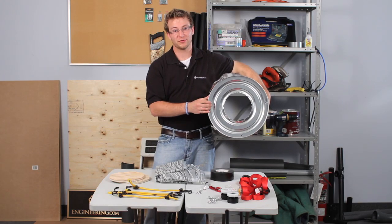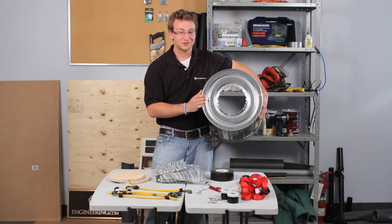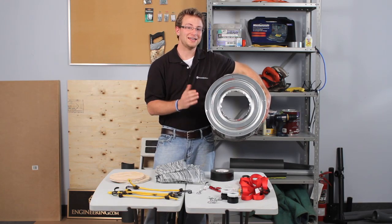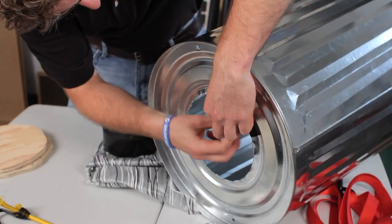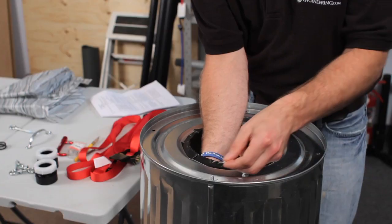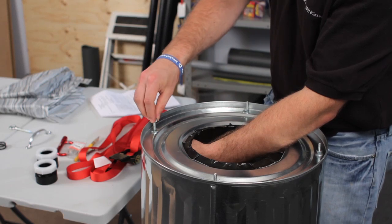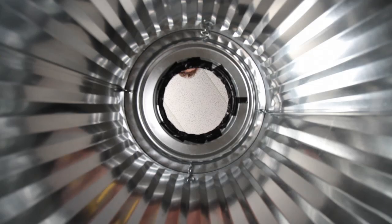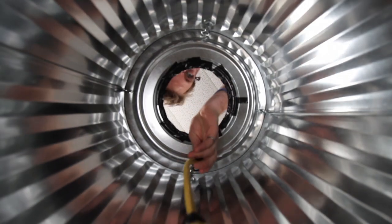We started by cutting a hole in the bottom of this garbage can. For this size can, we cut a hole that was 8 inches in diameter. Let's cover the rough edges with tape so I don't get cut. I then drilled four quarter-inch holes evenly spaced in the bottom of the can for the eye bolts, and attached the bungee cords.